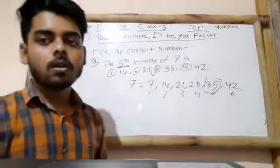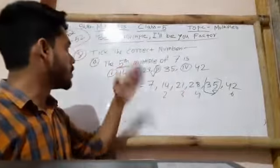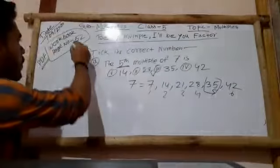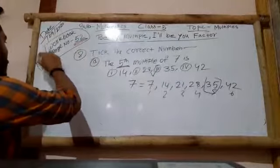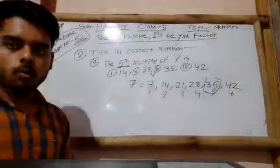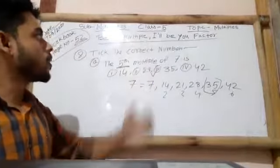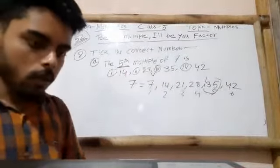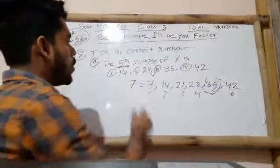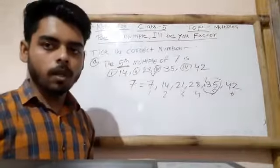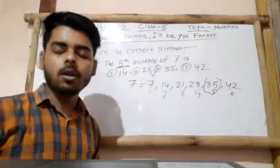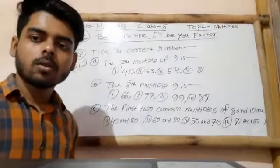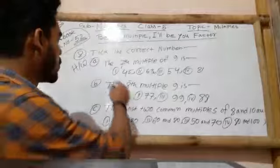Like that, you have three more questions — find the correct answer in your workbook, page number 52. I have already given you the PDF of your workbook based on the chapter 'Be My Multiple and I Will Be Your Factor.' Now I will give you some homework from this chapter.